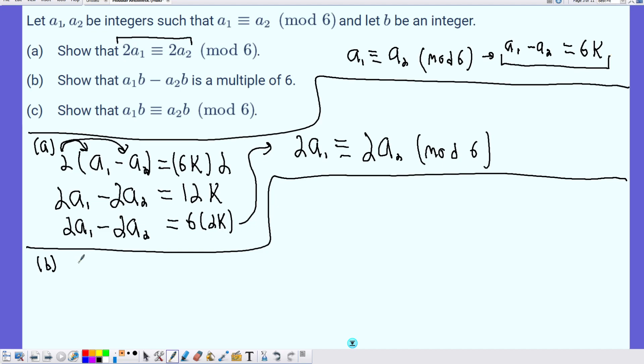I'm going to take my integer B and multiply it with A1 minus A2. And of course, what I do to one side of the equation, I have to do to the other. So I'm going to do 6K times B. Distributing the B, we have A1 times B minus A2 times B is equal to 6 times KB.